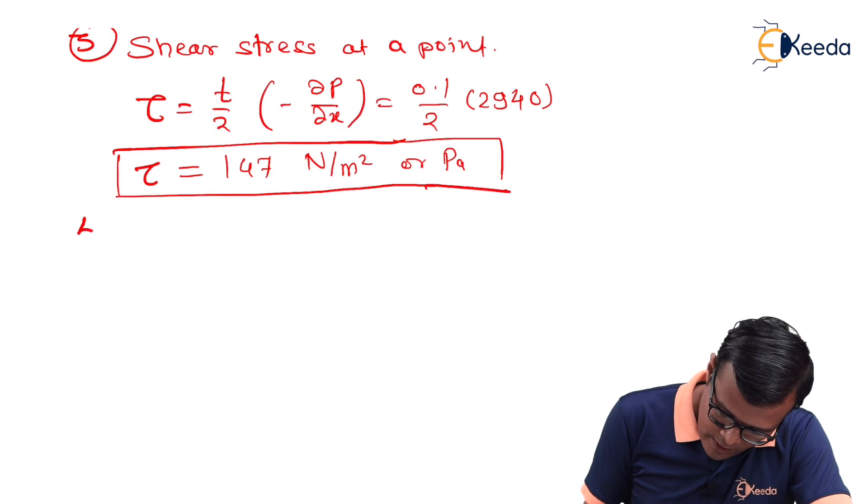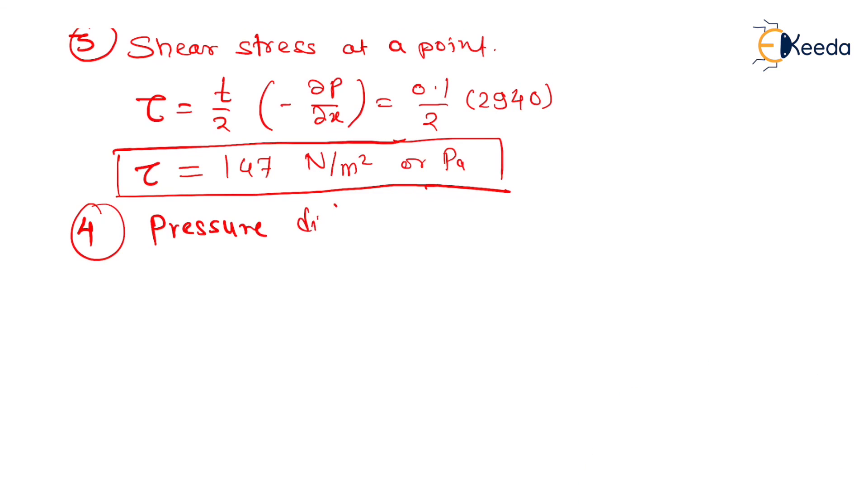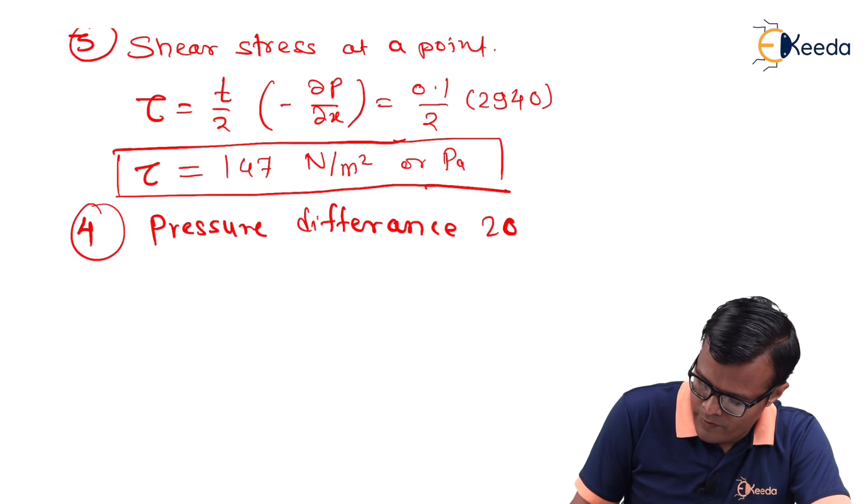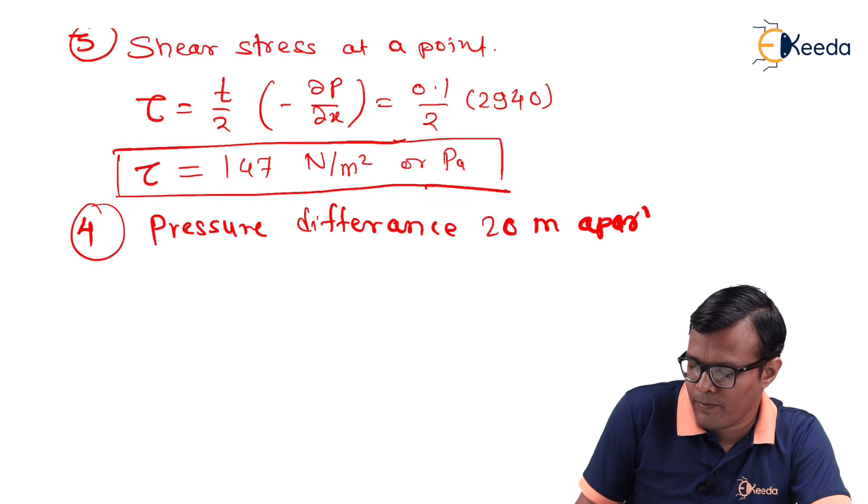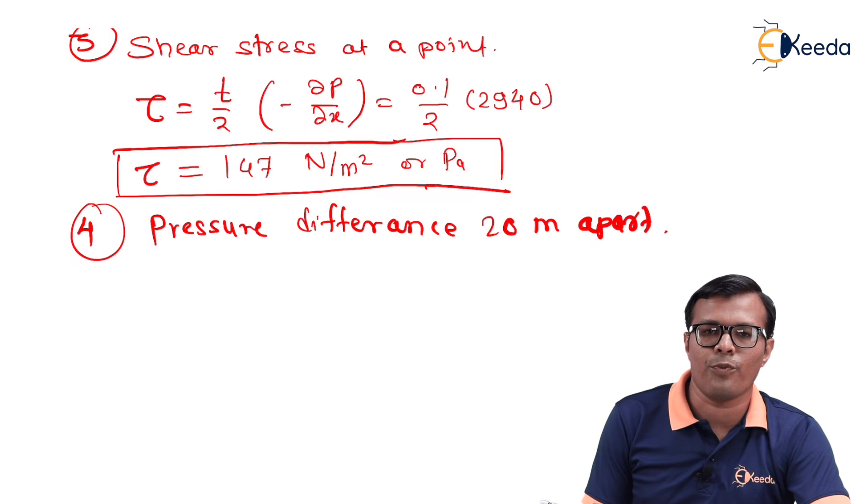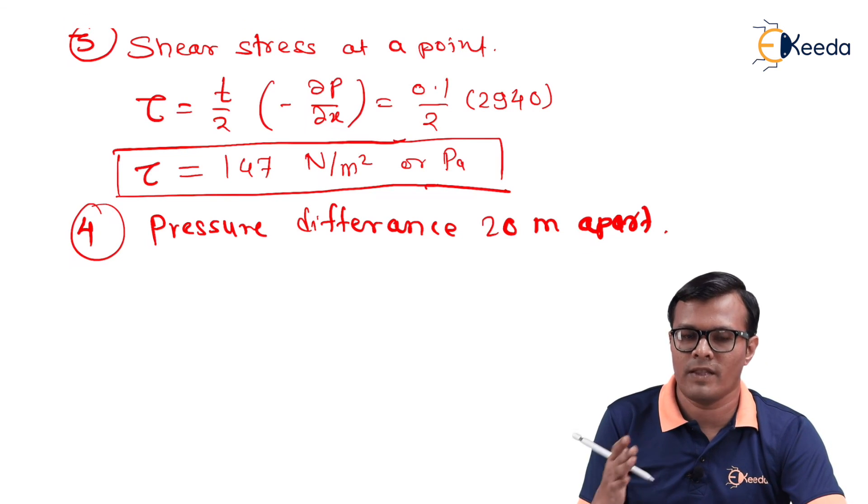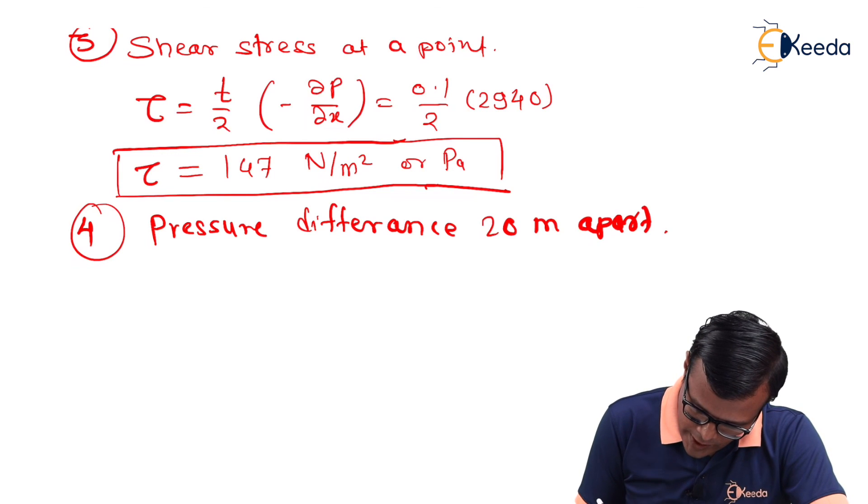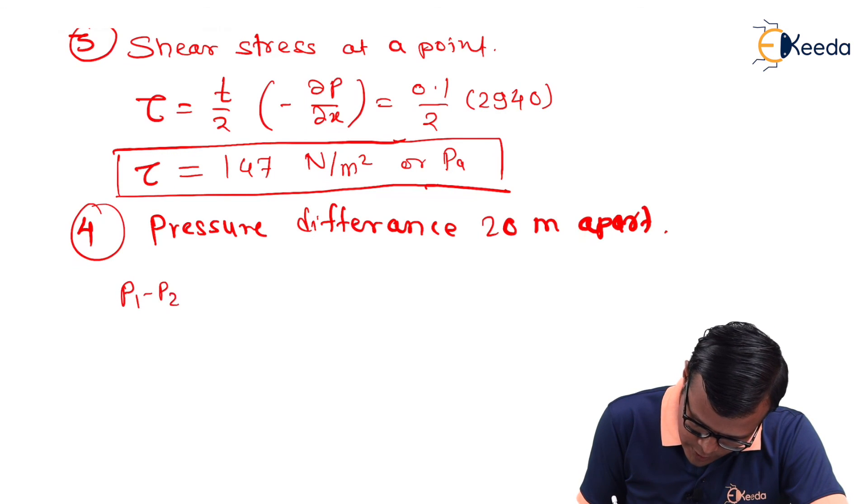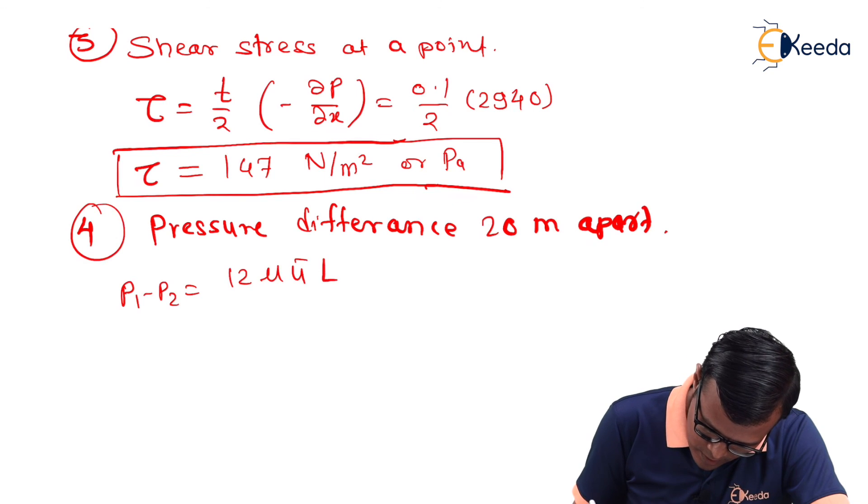Further, we can calculate pressure difference. 20 meter apart means there are total two points which are separated by 20 meter. And we are finding the pressure difference between these two points. So, we have to use formula p₁ - p₂ = 12μūL/t².